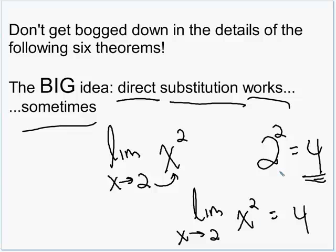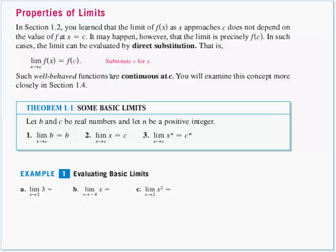If you get 0 divided by 0, then we're going to have to take other steps. But don't lose sight of the forest because all the trees get in the way. Six theorems are about to be thrown at you, but the big idea is direct substitution sometimes works — it should be your first attempt at finding a limit.